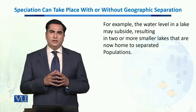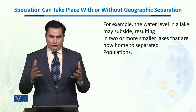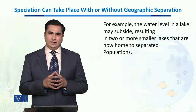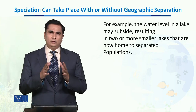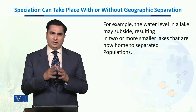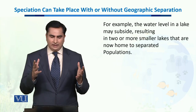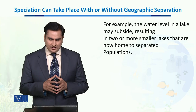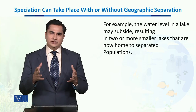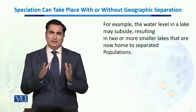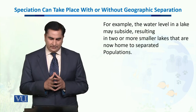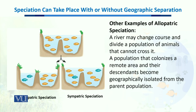For example, there was a lake full of water and one species of fish was living in it. Somehow, the water level dropped, and as a result, two or more small lakes were formed, becoming home to the same population but now separated by land. This is an example of allopatric speciation.